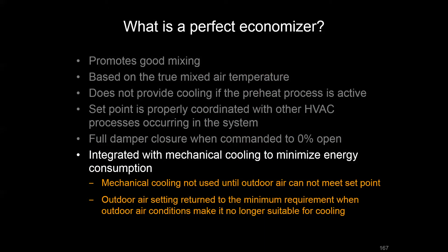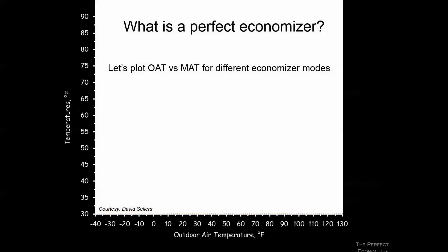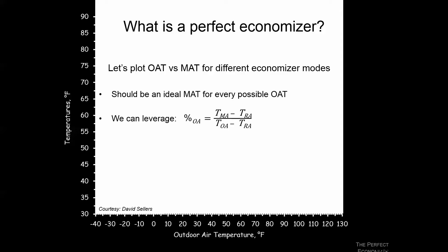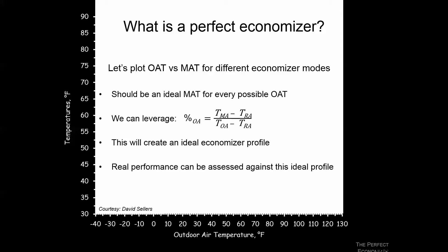With those modes and operation considerations in place, let's look at what mixed air temperatures we should get at an array of outside air temperatures. For every outside condition, our ideal economizer should reach a specific mixed air temperature. Using conservation of energy and mass and treating air as an ideal gas, we derive an equation based on the ratio of economizer temperatures to give us the percent outside air being brought in, creating an ideal economizer performance profile.